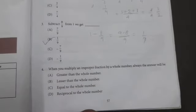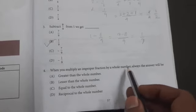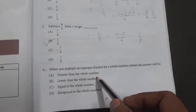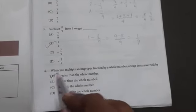Question four: When you multiply an improper fraction by a whole number, always the answer will be greater than the whole number. So the whole number, greater than. Option A is the correct answer.